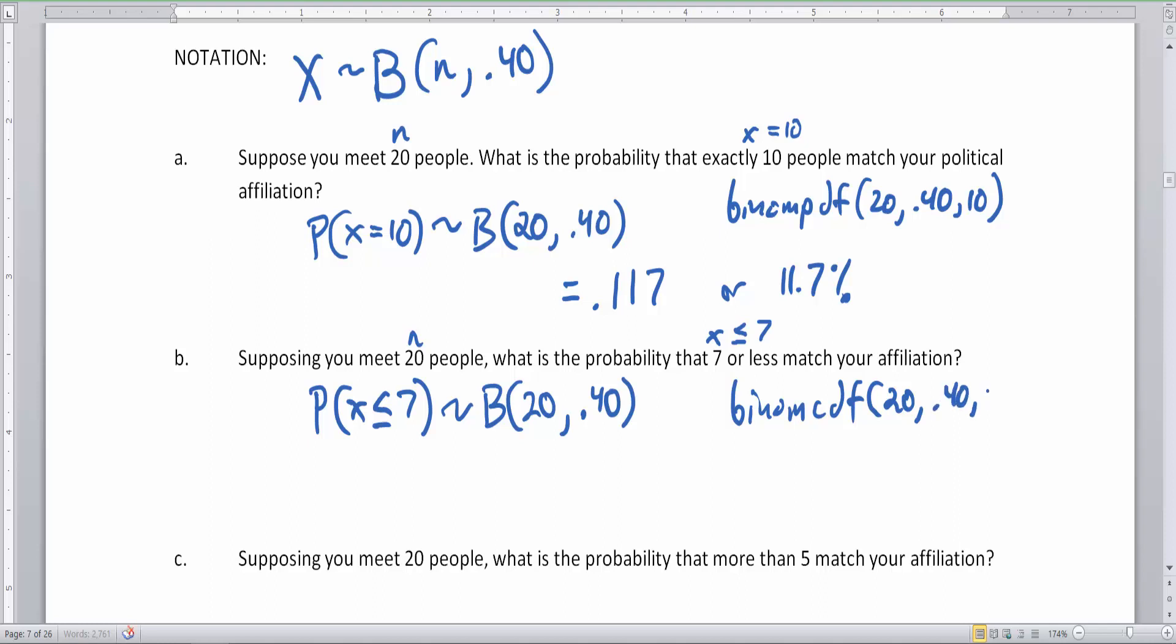CDF, which is 20 comma 0.40 comma. And in this case, we don't want exactly 10. We want seven. And we want seven here. And the reason why we want seven is because we want seven or less. So what the calculator is going to do, this is so great. The calculator is going to do a binomial PDF of seven, six, five, four, three, two, one, and zero. It's going to do all of those for us. So holy smokes, does that save a lot of time?